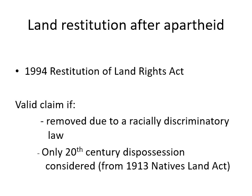This act created a process of claiming for land that you had been removed from. It's very important to know that in this legislation, you had to prove that you were forcibly removed due to a racially discriminatory law — like the apartheid laws we discussed. They also made the decision to only look at 20th-century dispossession — only people removed after the 1913 Natives Land Act — and they weren't going to go back to the 19th century. A process was put in place to try and get some of that history reversed, creating what we call landscapes of restitution.